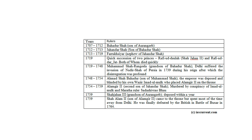Look at this chart. After the death of Aurangzeb, nine rulers ruled the territories of the Mughals — these nine rulers are called the later Mughals. They are: Bahadur Shah, Jahandar Shah, Farrukhsiyar, Muhammad Shah, Ahmad Shah, Alamgir, Shah Alam, Akbar II, and Bahadur Shah II. The chart shows which year they ruled and all details.